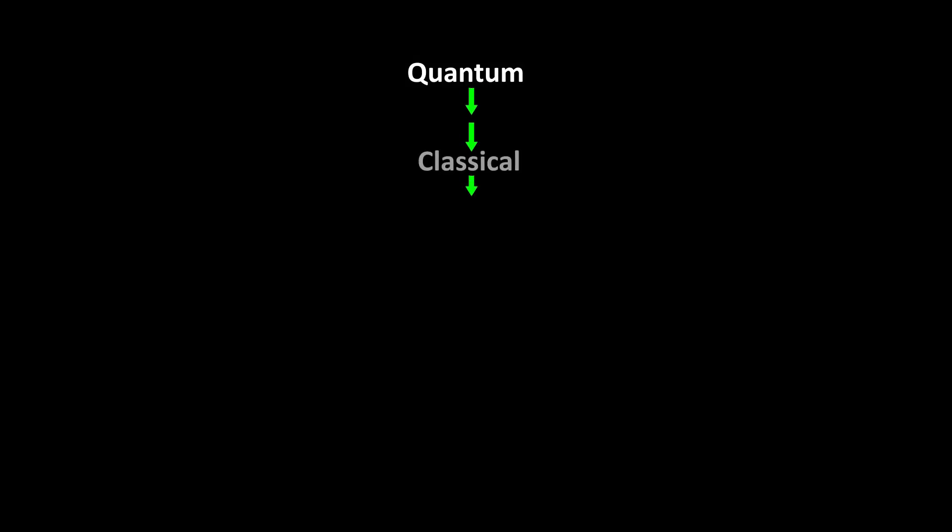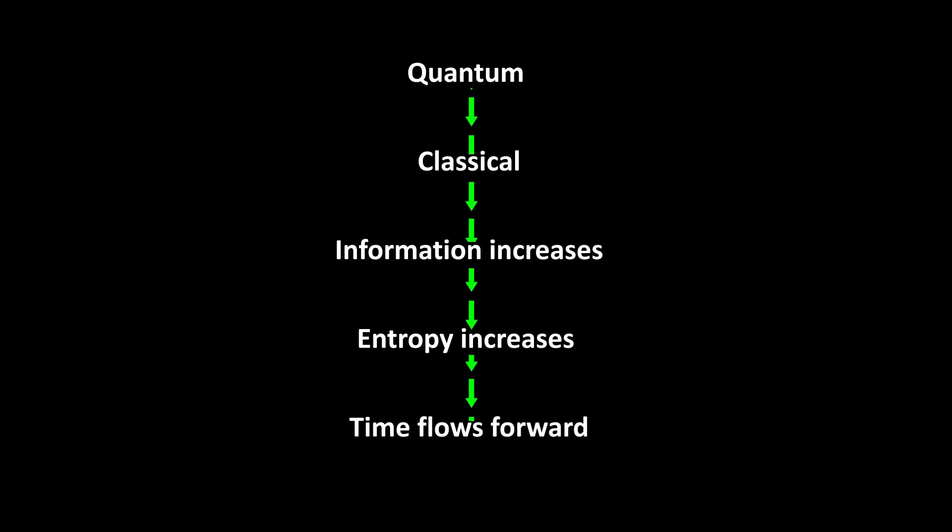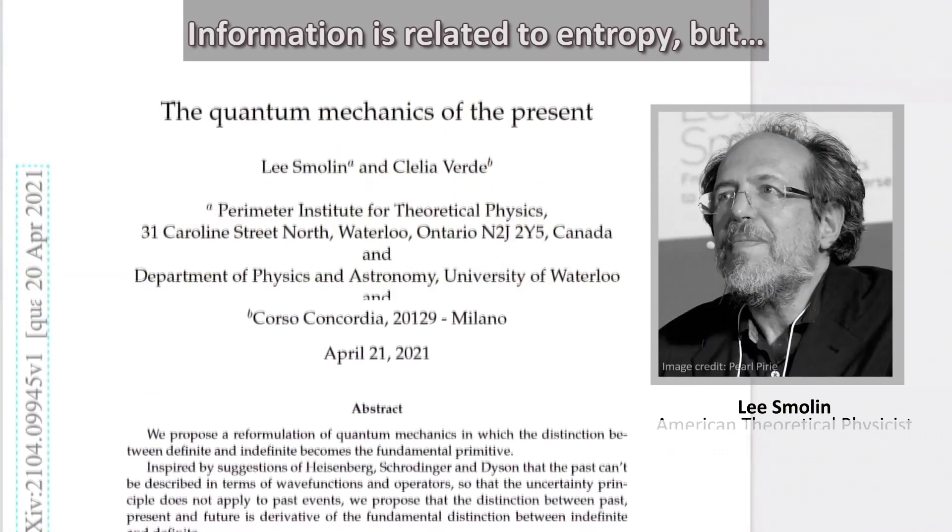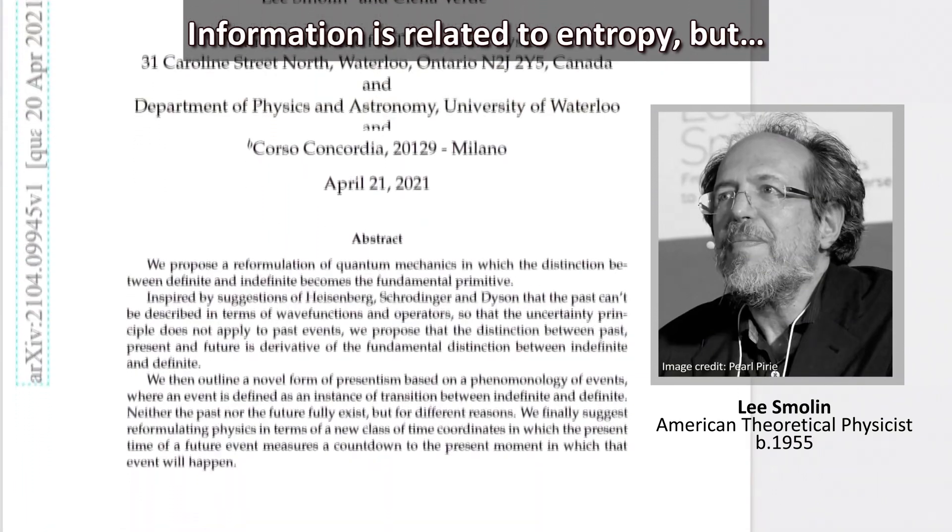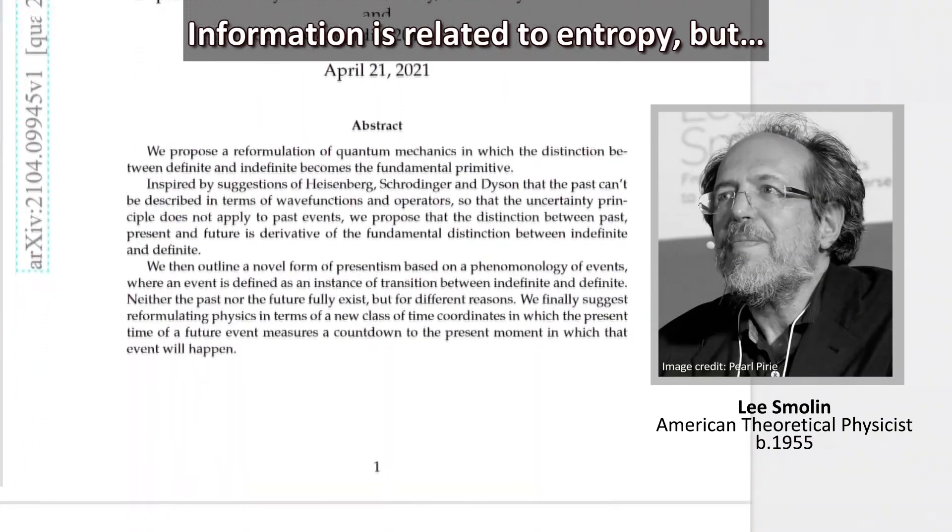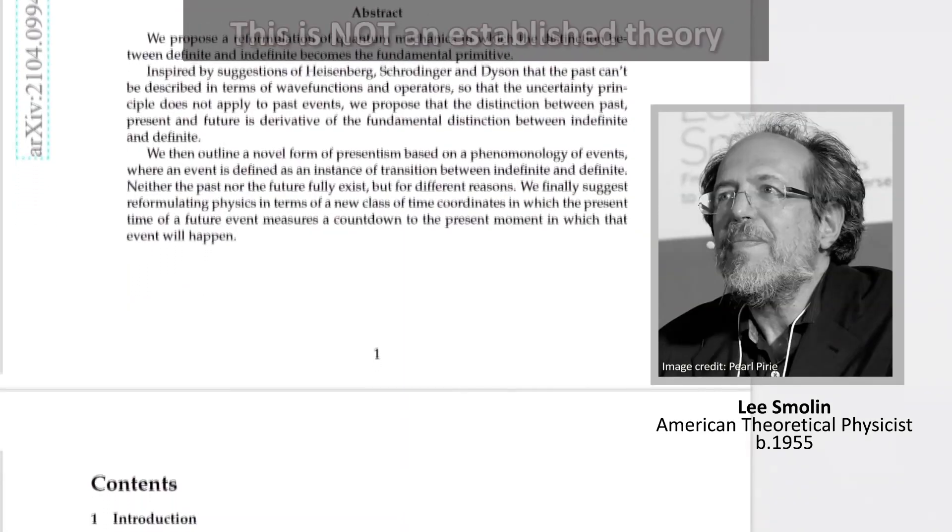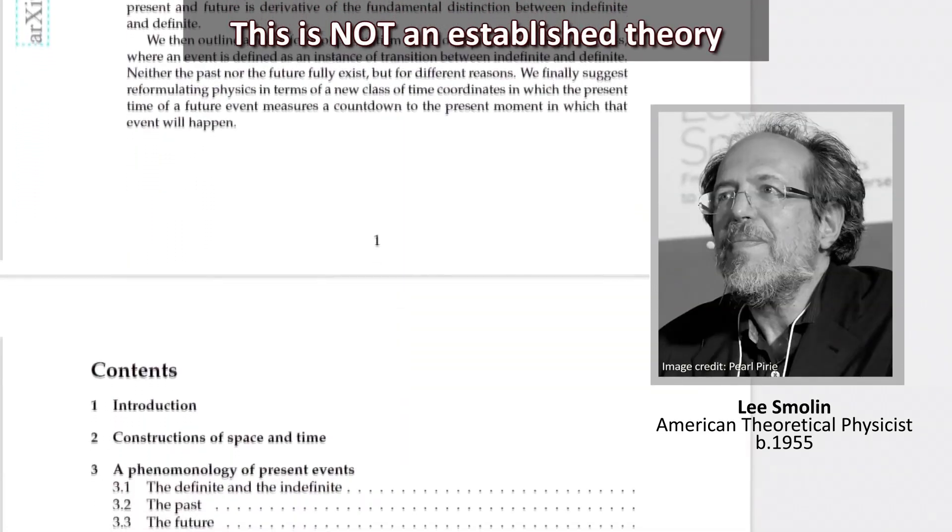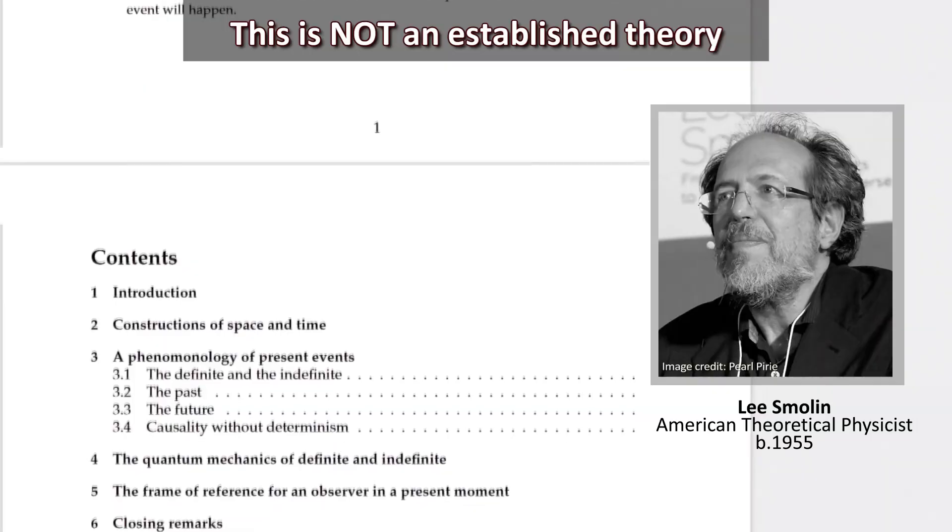Quantum becomes classical, information increases, entropy increases, and time flows only forward. Note that although it is established that information is related to entropy, both Smolin's paper and my extrapolation of his paper to information are not established theories but conjecture. So you should take this only as food for thought.